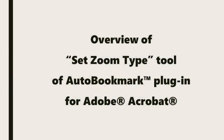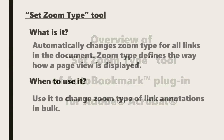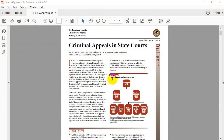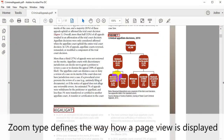In this video we're going to look at an overview of the Set Zoom Type tool in the Auto Bookmark plugin for Adobe Acrobat. This tool automatically changes the zoom type for all links in a document. The zoom type defines the way that a page view is displayed. It's useful for changing the zoom type of multiple link annotations at once.